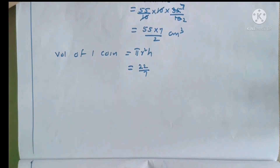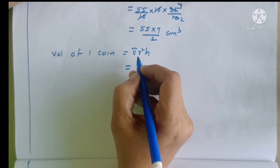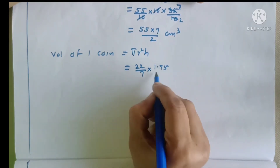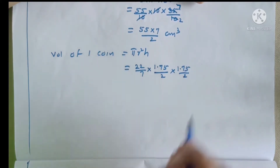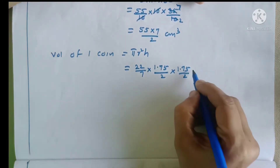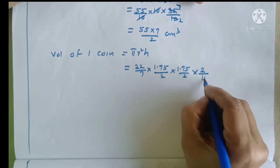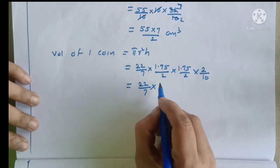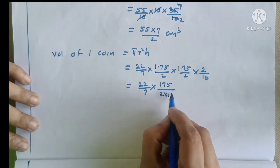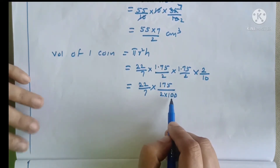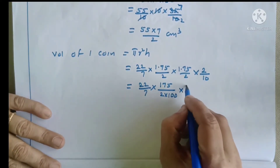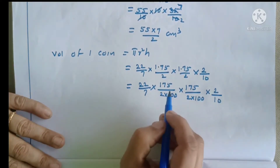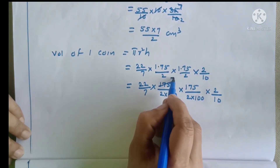Volume of one coin equals π r² h, because the coin is a cylinder. So π value is 22/7, r value is 1.75/2, r squared is (1.75/2)², and h value is 2/10. We convert 1.75 to 175/100 and simplify the fractions to get the volume of one coin.